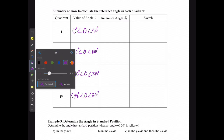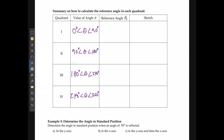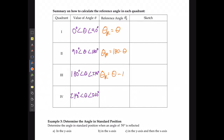How do we actually solve the reference angles? In quadrant one, the reference angle is the same as the original angle. In quadrant two, the reference angle equals 180 minus the original angle. In quadrant three, the reference angle equals the original angle minus 180. And in quadrant four, the reference angle equals 360 minus the original angle.